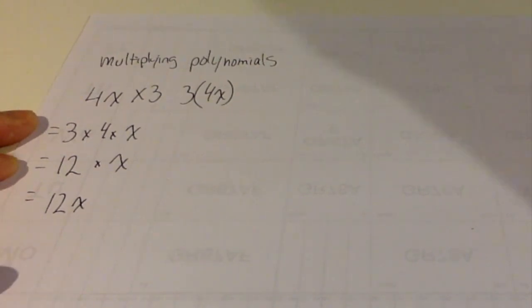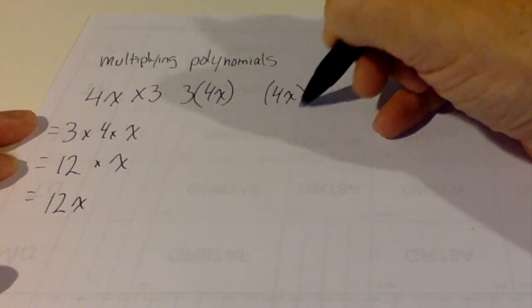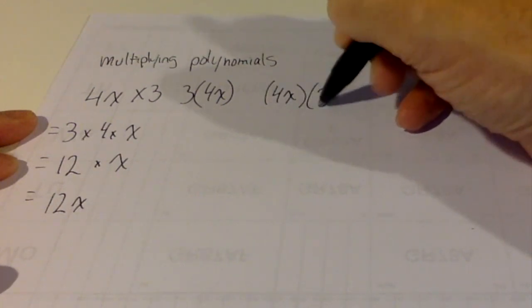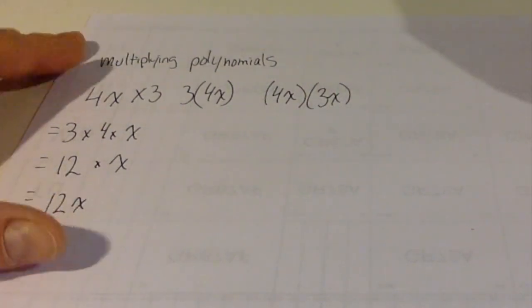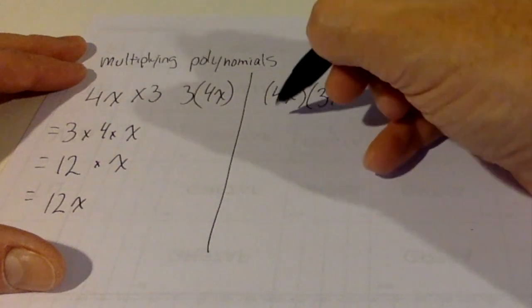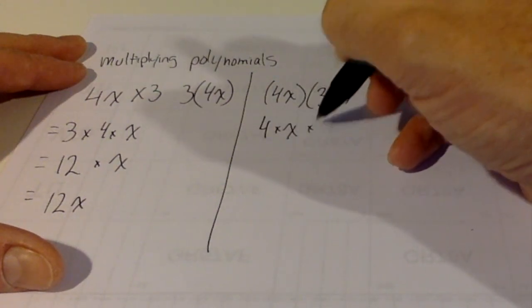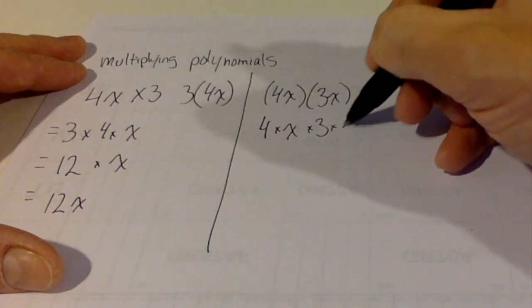However, let's say you had 4x times 3x. It changes things a little bit because now you have 4 times x times 3 times x.